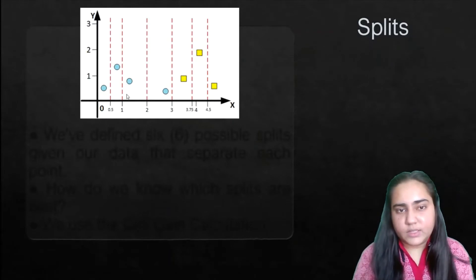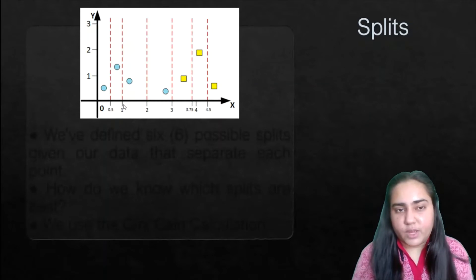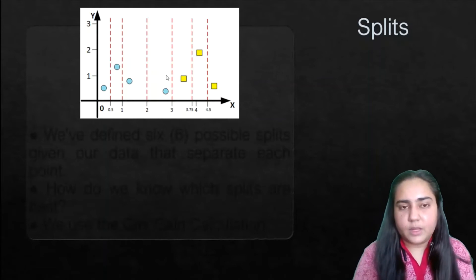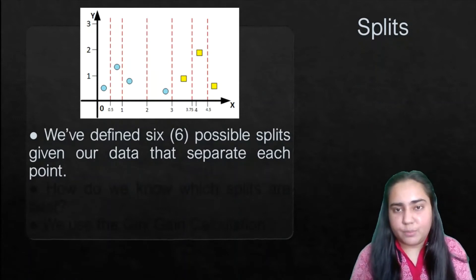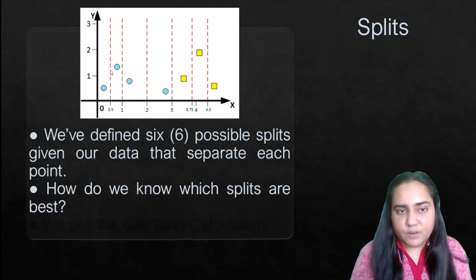Here is the same kind of dataset but with fewer points — four blue and three yellow. For each data point we have created one split: one at 0.5, then between 0.5 and 1, between 1 and 2, 2 and 3, 3 and 3.75, and 3.75 and 4.5. So there are six splits for seven data points. Now how do we know which split is the best? If we take the 0.5 split, one blue is misclassified; if we take the split at 2, one yellow is misclassified. We have to try all these splits — and that's determined by Gini gain calculation.